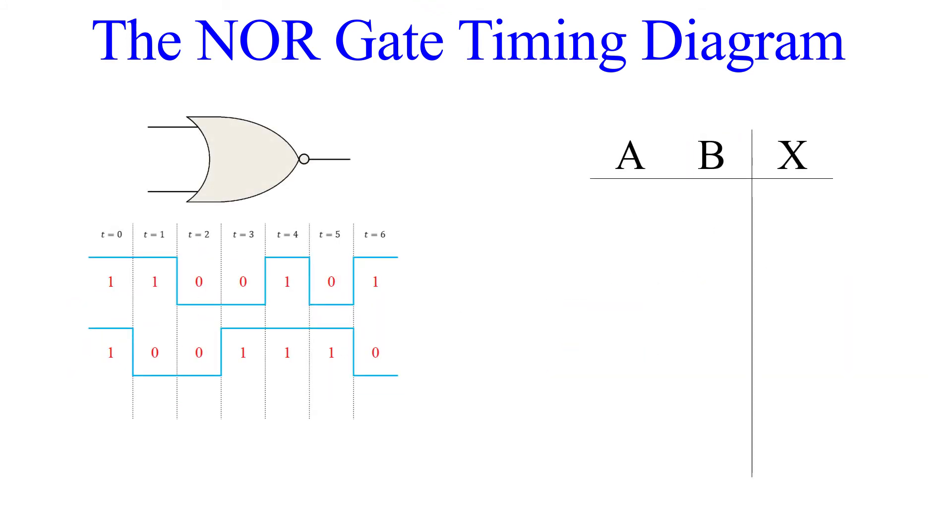Now let's look at a different timing diagram. We're going to make a truth table of this diagram and then we'll draw the output waveform. Let's place these values in the truth table. Now we can find the outputs of each time segment. Our truth table is now complete. All we have left is to draw the output waveform.